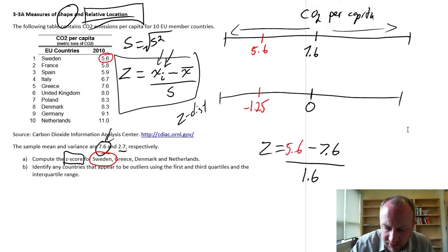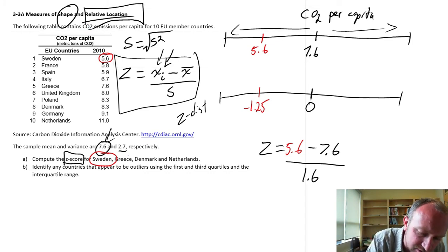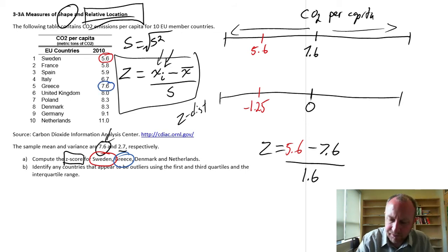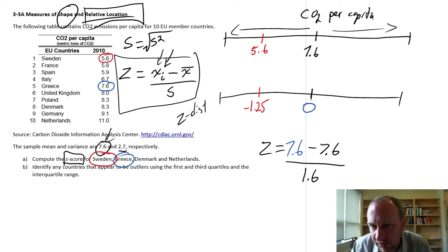Okay, our next observation. Let's change color. Let's go to Greece. Well, Greece is 7.6. So that's exactly our mean. If I put 7.6 in here, the numerator is 0. So this 0 is now blue for Greece. Greece is 0 standard deviations from the mean. So Greece is exactly equal to the mean value.